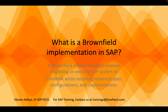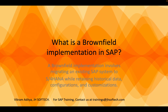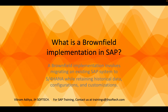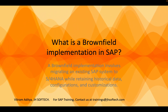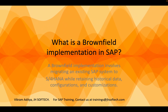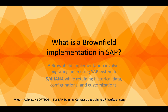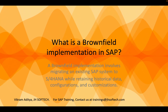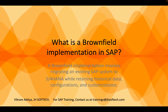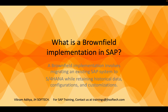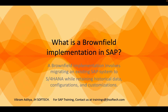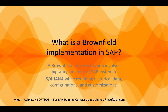What is a brownfield implementation in SAP? A brownfield implementation involves migrating an existing SAP system to S/4HANA while retaining historical data, configurations and customizations. For example, if an organization is working on an older version of SAP ERP and would like to upgrade to S/4HANA, and if there is compatibility between both versions, it would be highly acceptable to migrate it instead of going ahead with a new implementation, which is called a Greenfield project. So we are just migrating from the old version to the latest version.